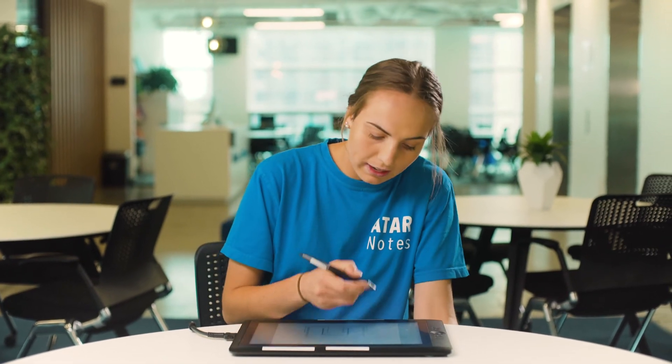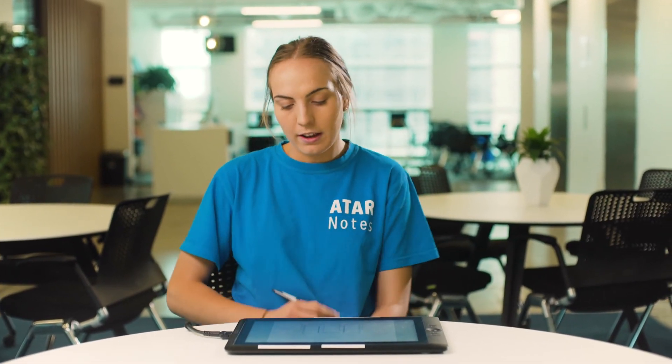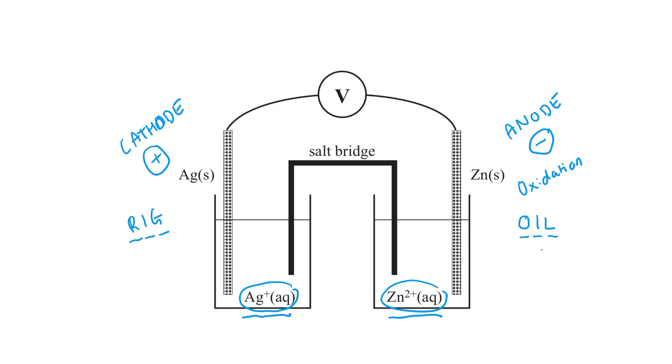At the cathode, we have RIG, meaning reduction is gain, or reduction is a gain of electrons. Therefore, if we are losing electrons at the anode and gaining them at the cathode, our electrons must be flowing from the anode to the cathode. So from the zinc electrode to the silver electrode.